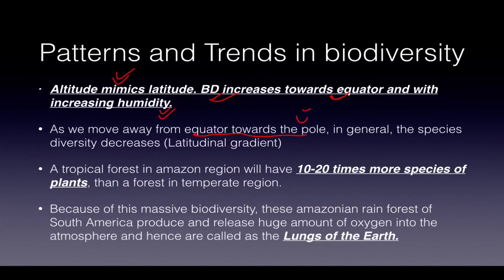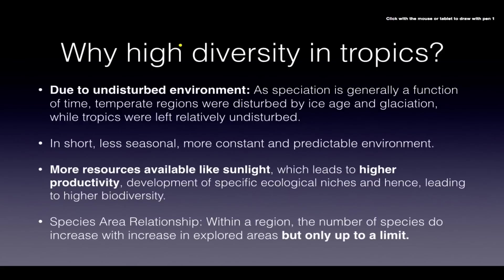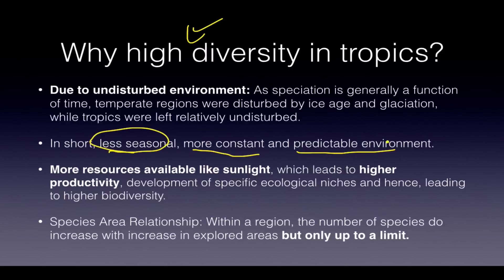Biodiversity increases towards the equator and with increasing humidity. Moving from equator towards the poles is called latitudinal gradient — both number and diversity of species decrease. For example, the Amazon rainforest has 20 times more species than temperate forests, which is why it produces huge amounts of oxygen and is called the 'lungs of the Earth.' Why? Because the environment is relatively undisturbed, huge, and more constant and predictable.